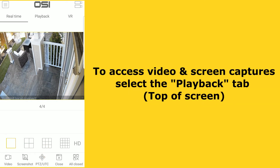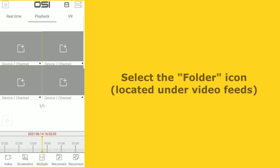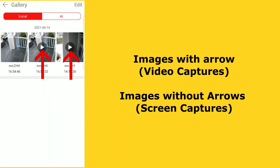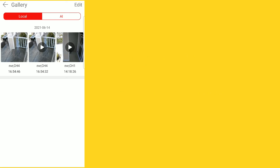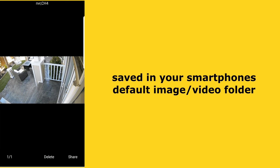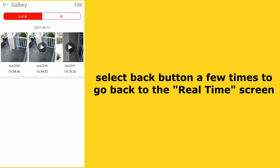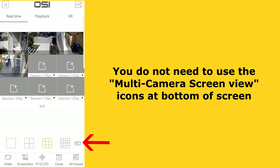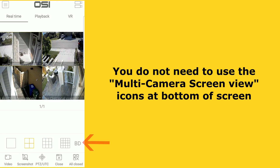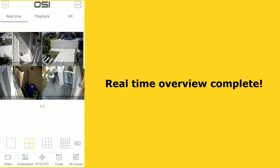To access the video and screen captures you've taken, select the playback tab at the top, then underneath the four camera preview screens you will see a folder icon — tap on that. Here you will see all the screen captures and video clips you've taken. Images with arrows in the middle are your video captures, and those without arrows are your screen captures. Tap the image or video you want to view. These are also easily accessible through your smartphone's default camera storage folder. The icons at the bottom that look like multiple squares are just different split-screen views, mainly used for multiple camera kits, so you won't need to use these.